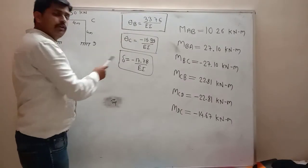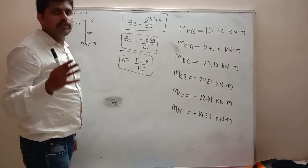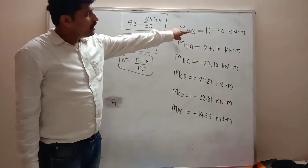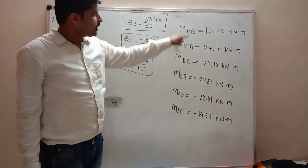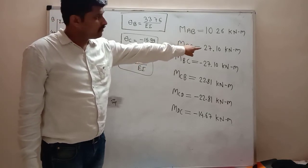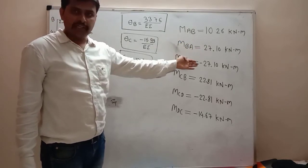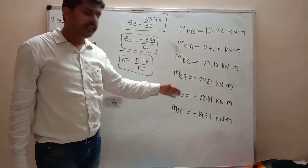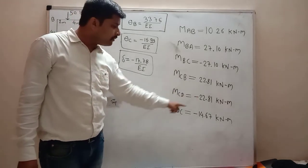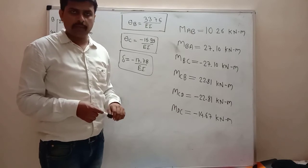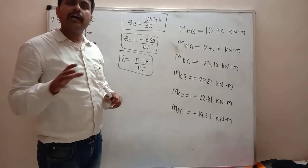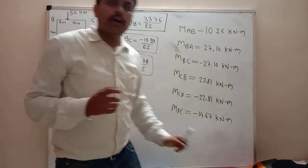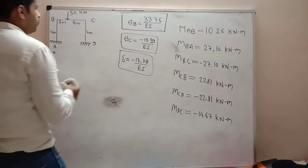After substituting all values into equations 1 through 6, the final end moments are: MAB = +10.26 kN·m, MBA = +27.10 kN·m, MBC = −27.10 kN·m, MCB = +22.81 kN·m, MCD = −22.81 kN·m, and MDC = −14.67 kN·m. Using these moments, we will draw the final superimposed bending moment diagram (BMD).